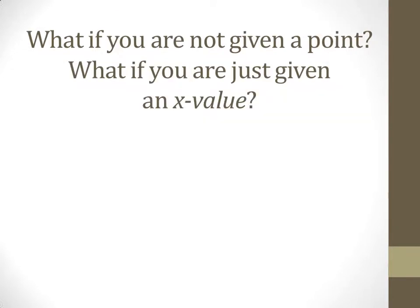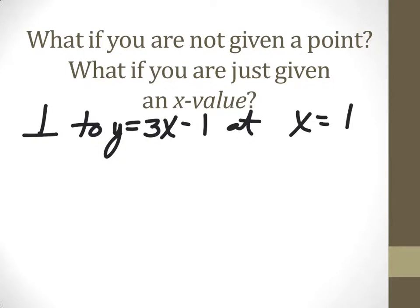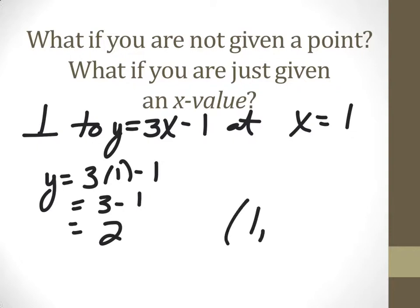Now what if you're just given a point? The question could be find a line that's perpendicular to y equals 3x minus 1 at x equals 1. That means at x equals 1, it's perpendicular to this line, which means it touches here. When x is 1 we can find the y value by substituting in. So y equals 3 times 1 minus 1, which is 3 minus 1, which is 2. So that gives us the point 1 comma 2.